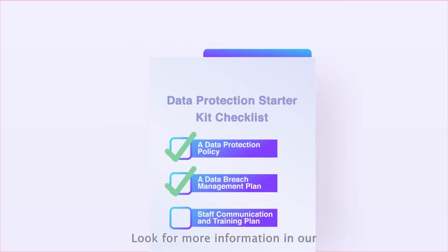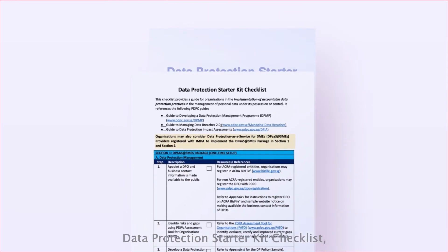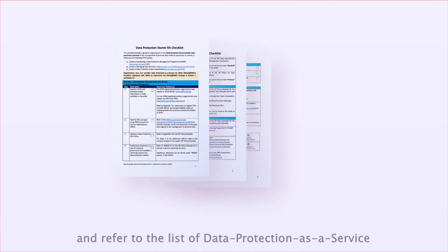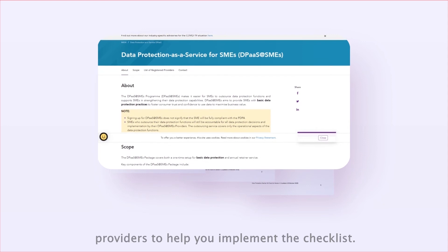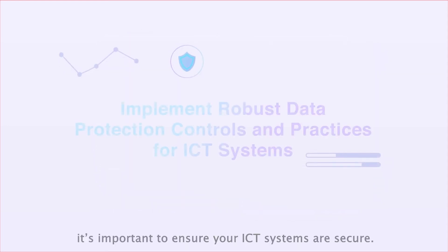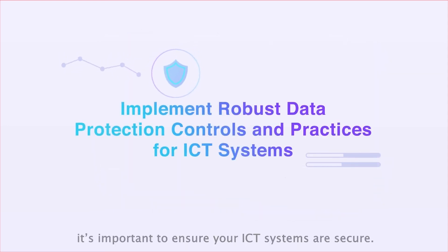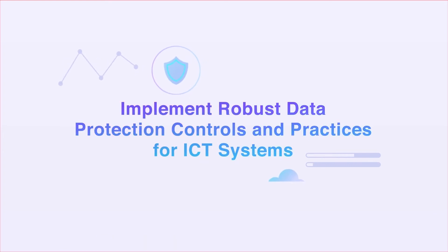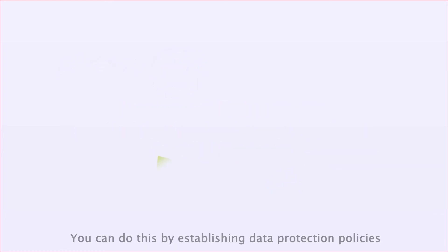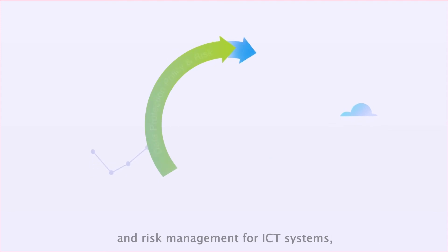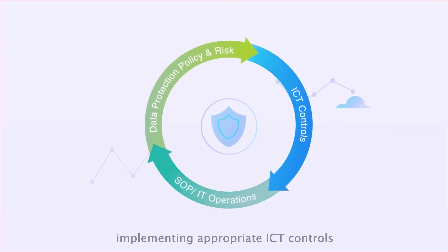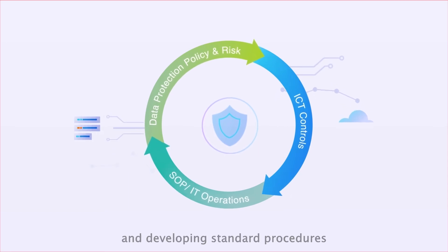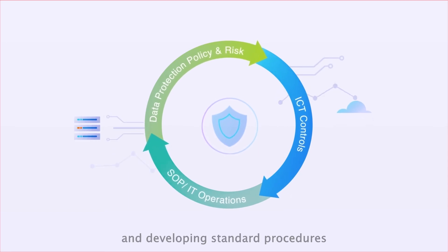Look for more information in our data protection starter kit checklist and refer to the list of data protection as a service providers to help you implement the checklist. Lastly, it's important to ensure your ICT systems are secure. You can do this by establishing data protection policies and risk management for ICT systems, implementing appropriate ICT controls, and developing standard procedures and processes.